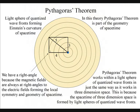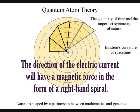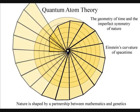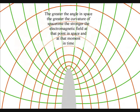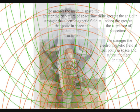The magnetic fields are always at right angles to the electric fields, forming the local space-time symmetry and geometry that will spiral out, creating the visual and mathematical patterns of our universe. The greater the angle in space, the greater the curvature of space-time, the stronger the electromagnetic field at that point in space and at that moment in time.